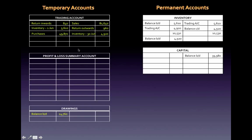Now the trading account has all the necessary entries to calculate gross profit, so we balance the account. Total credits exceed total debits by 31,200 — that is your gross profit. We now transfer that gross profit to a P&L summary account. The P&L summary account will then be used to deduct any other expenses and also close off those expense accounts, and to transfer any other revenues and close off those accounts as well.